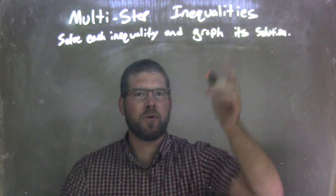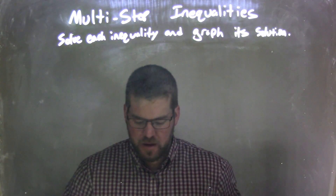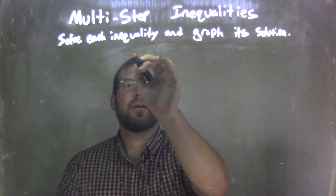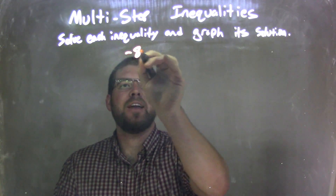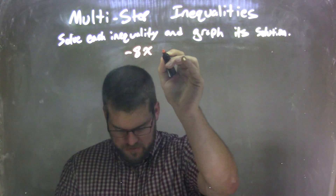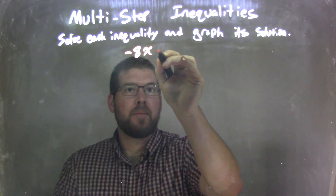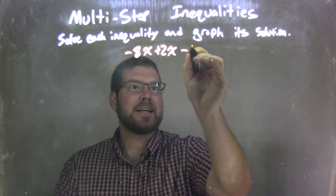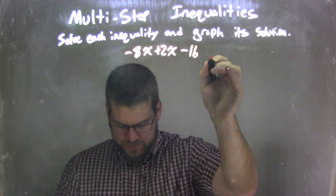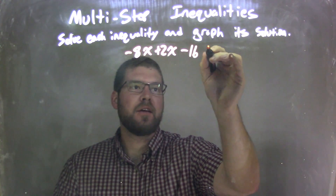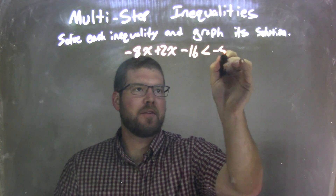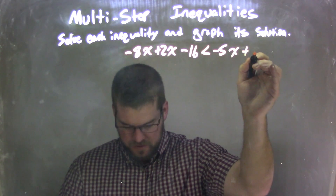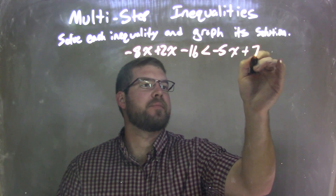We're going to solve this inequality and graph its solution. So if I was given this inequality: negative 8x plus 2x minus 16 is less than negative 5x plus 7x.